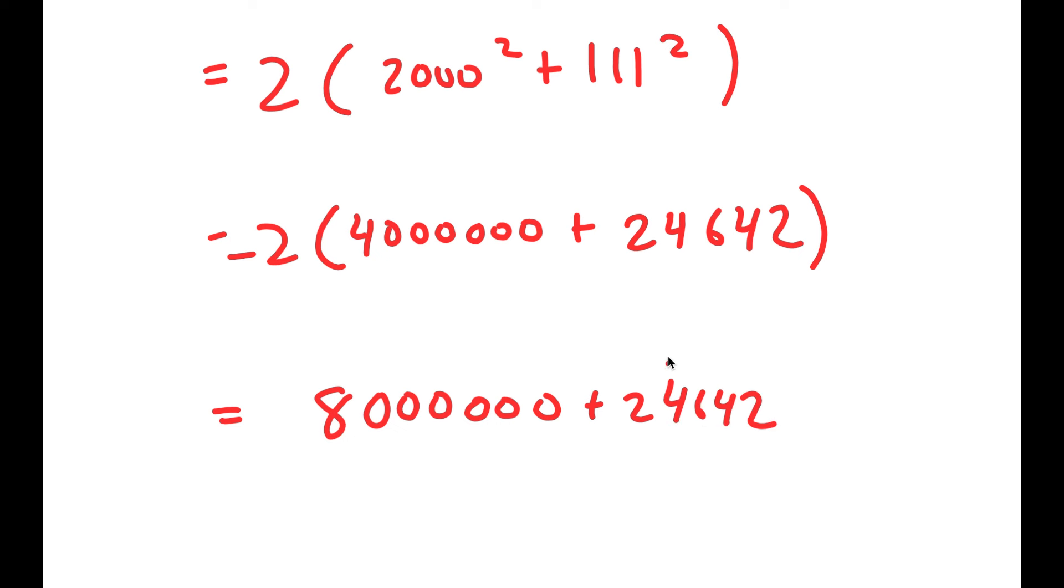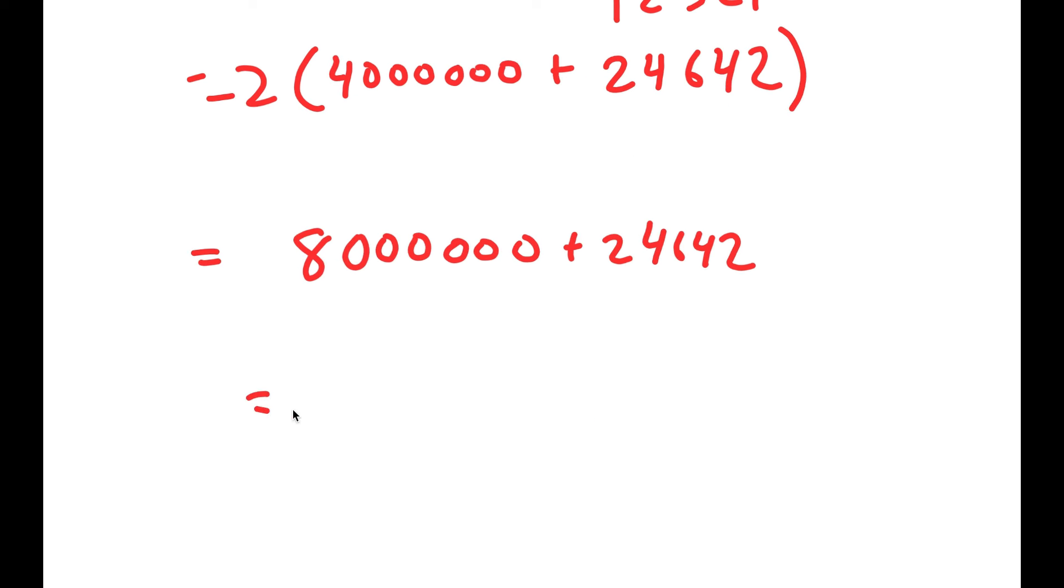Because 111 squared is 12,321. Now, if I add these, I get 8,024,642. So this is my answer.